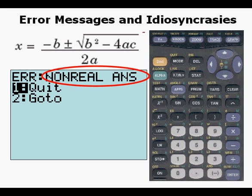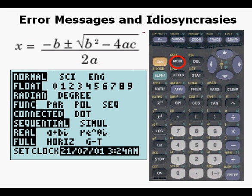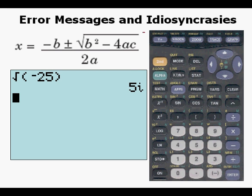Well, we can fix that by going to mode and going down to the numerical mode a plus bi and try the same thing. We get 5i. So this is the imaginary number 5i.